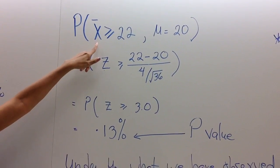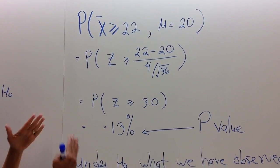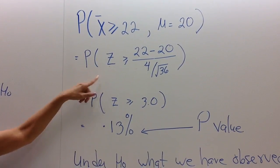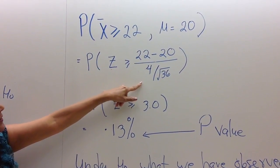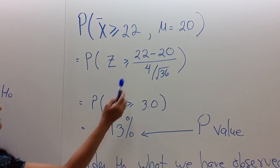Well, since X̄ has a normal distribution because n is large, we can change this value 22 to a z-score.